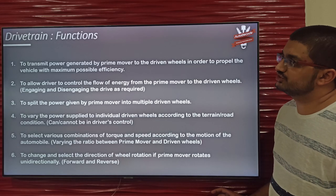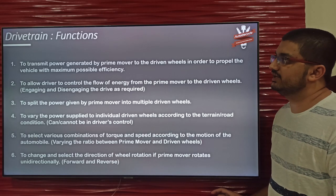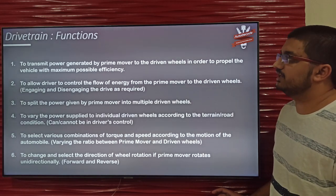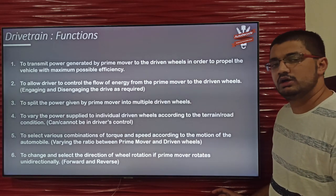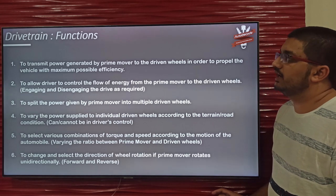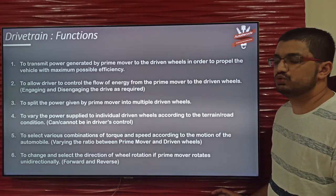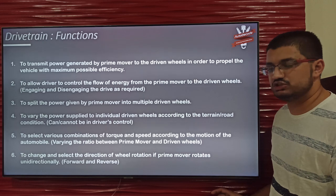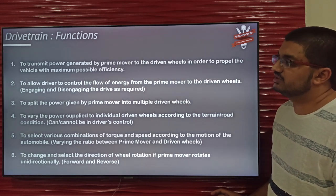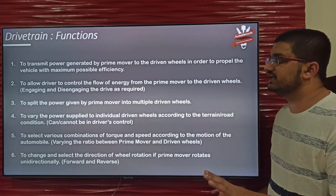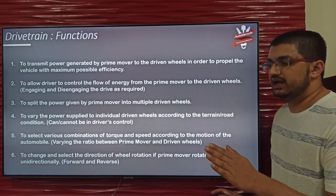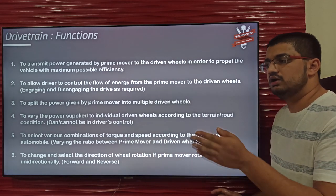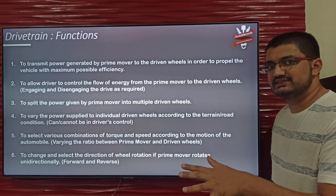The first function of the drivetrain is to transmit the power generated by the prime mover to the driven wheels, while doing this with maximum efficiency, that is minimum power losses. The second function is engagement and disengagement of the drive — engaging or disengaging the power given by the prime mover with the driven wheels.